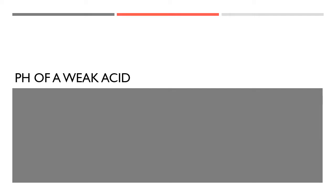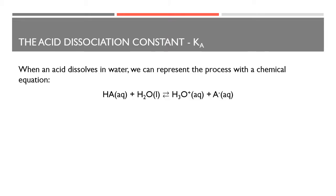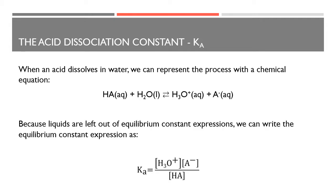In this video, we will be looking at how we can calculate the pH of a weak acid. We will still use the negative log of the hydronium concentration, but in this situation, our hydronium concentration isn't going to be the same as the concentration of our acid because we have weak acids and they occur in equilibrium, so we don't have a full production of H₃O⁺ ions.